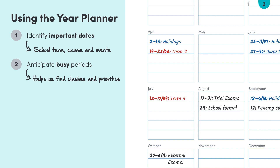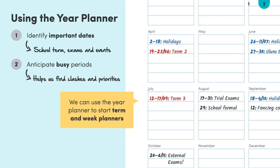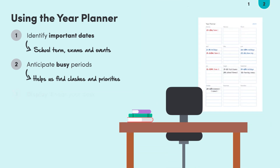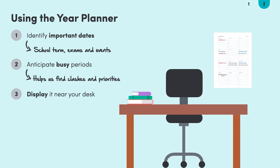Another great thing about the yearly planner is that we can use it to start our more detailed term and week planners. It already has plenty of the most important events on it. Not only do we save time, but we can also better anticipate what the coming weeks will be like. Once everything is ready to go, you can place the yearly planner in your study space on an empty wall. That way, the planner acts as a visual reminder that you can refer to whenever you're in the zone and studying.